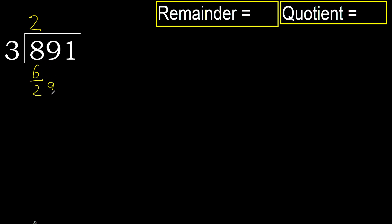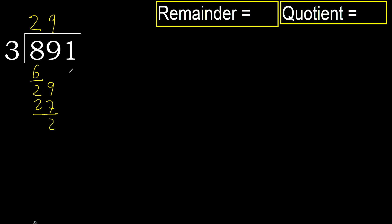Next: bring down 9, making 29. 3 multiplied by 9 is 27, which is not greater. Subtract.